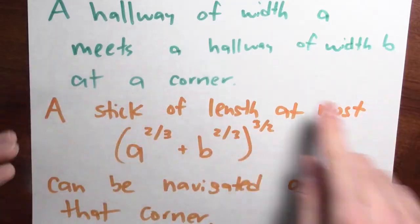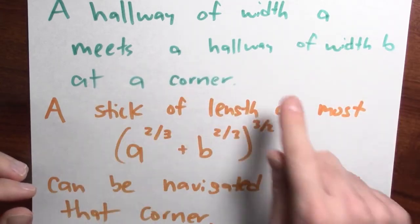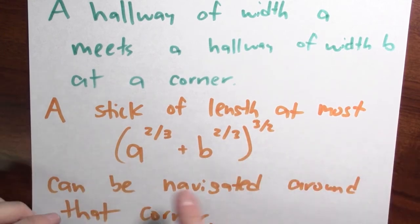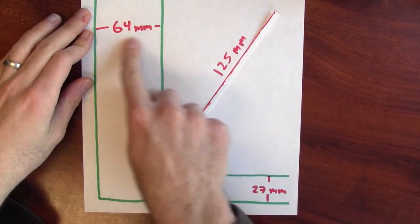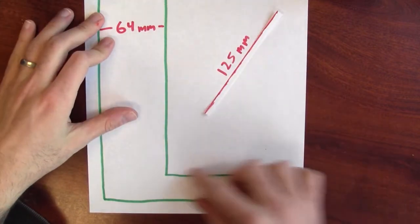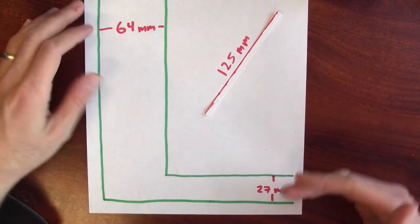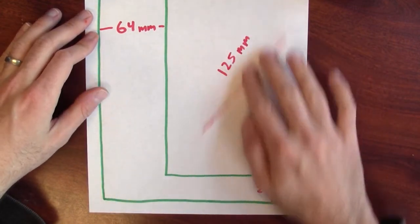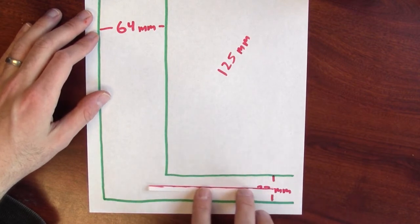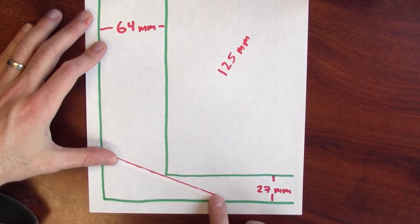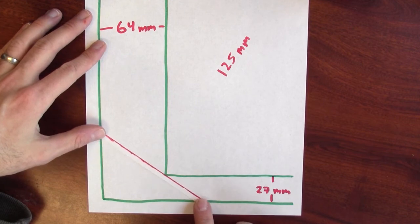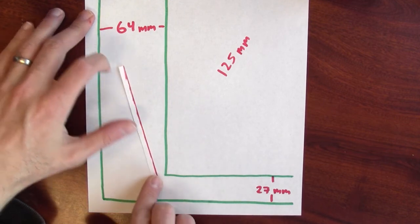We can summarize our answer: given a hallway of width A meeting a hallway of width B at some corner, a stick of length at most (A^(2/3) + B^(2/3))^(3/2) can be navigated around that corner. We can see this playing out in action — I made a model that you can download. Here's an example: a hallway of width 64 millimeters and another hallway of width 27 millimeters. The calculation tells us that a stick of length 125 millimeters will just be able to turn around this hallway. I start the stick moving down the hallway, rotate it around, it bumps up against the corner, but just barely makes it around, and then can be moved out of the hallway.